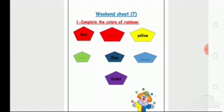After orange it's yellow. Red, orange, yellow. Number four is green - write green. Then from the beginning: red, orange, yellow, green, blue, indigo, and violet. Write indigo and violet.